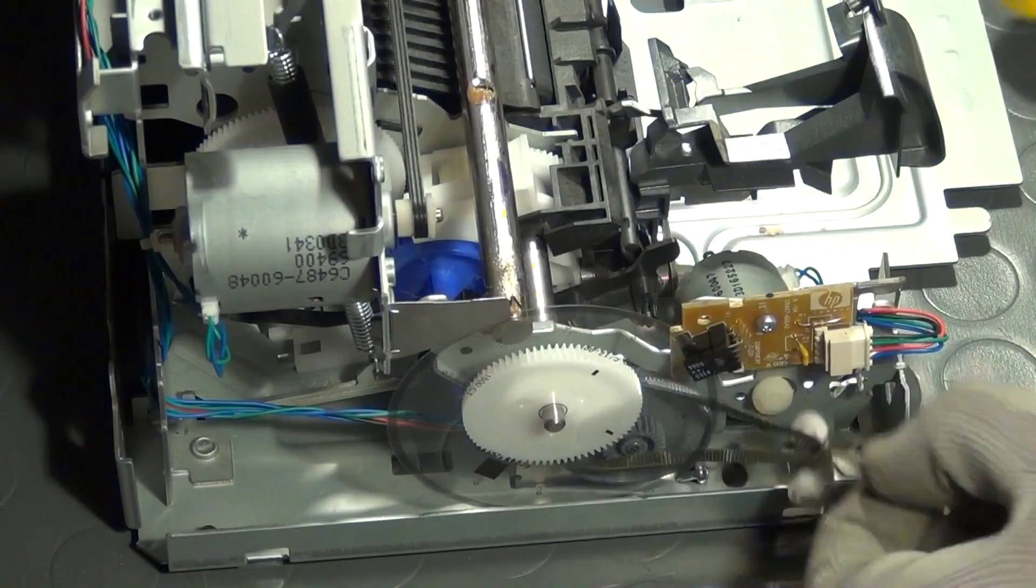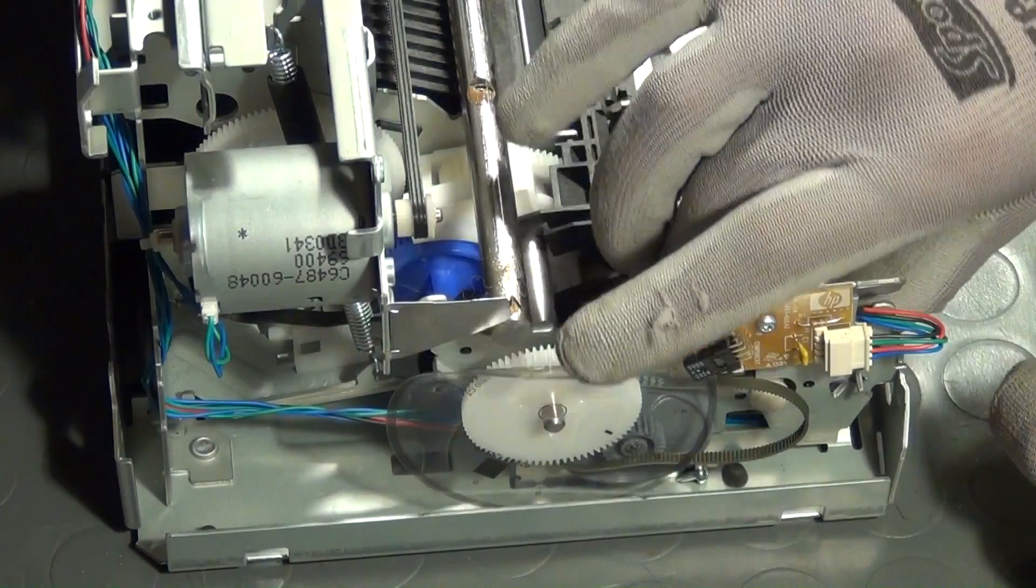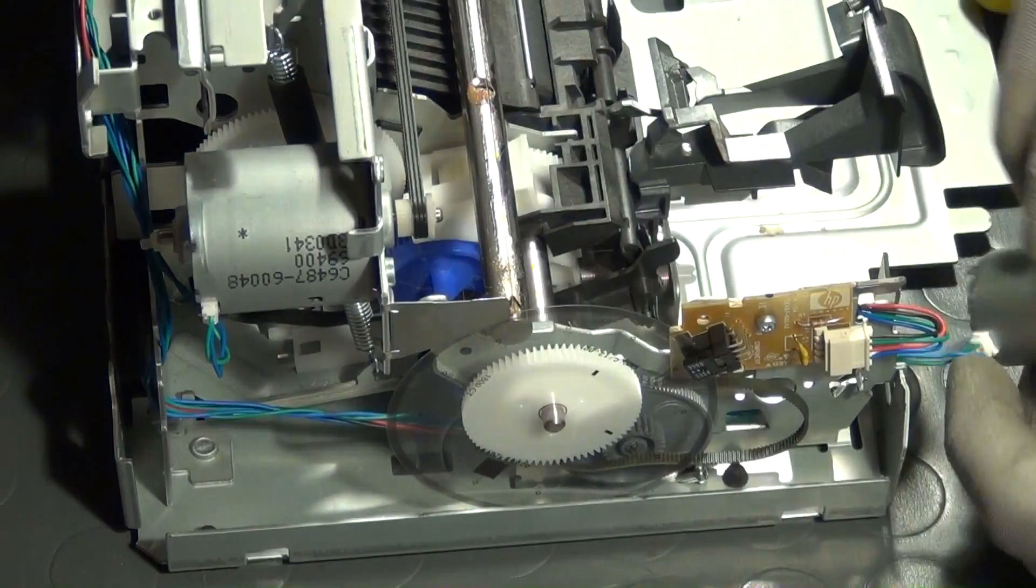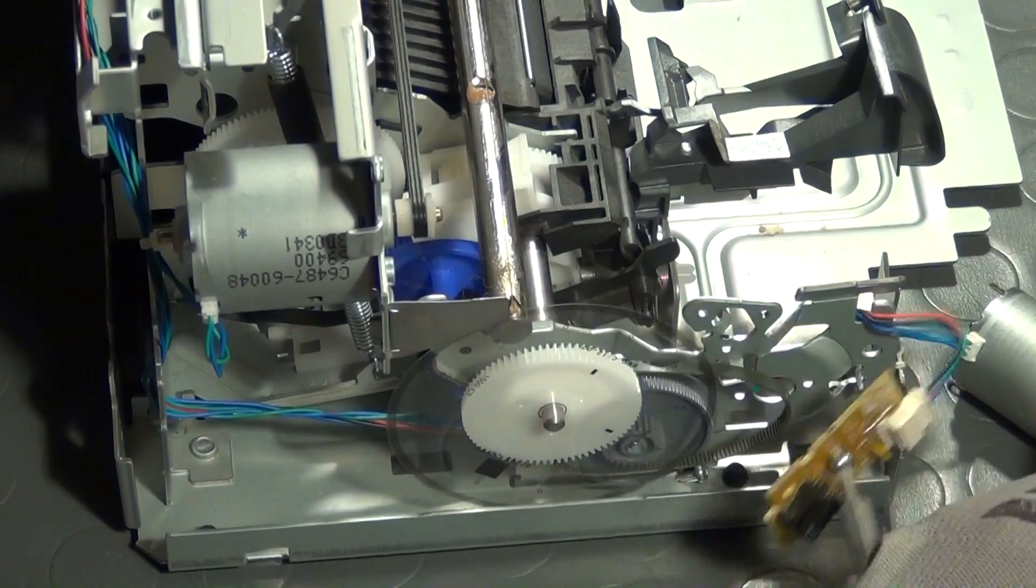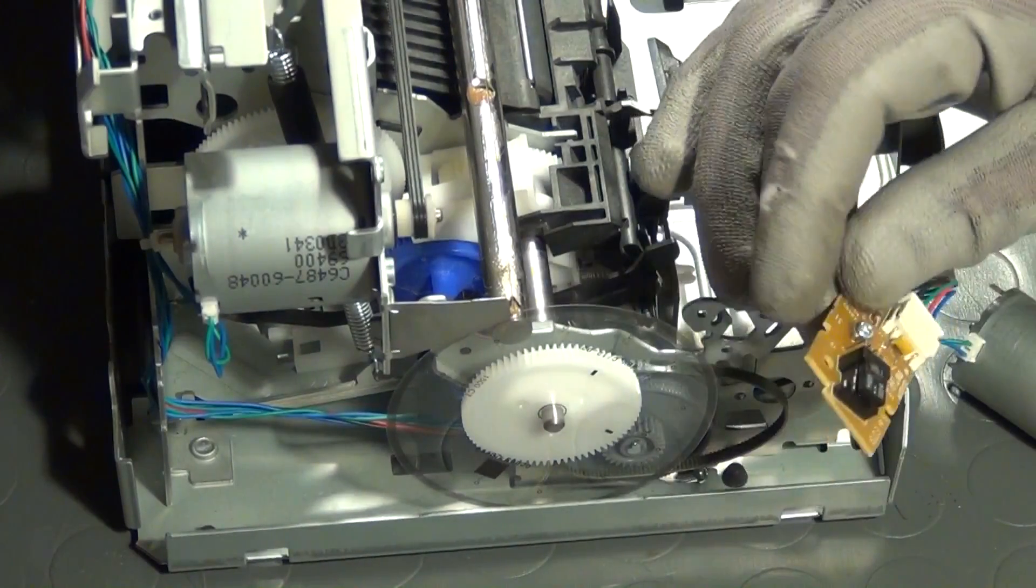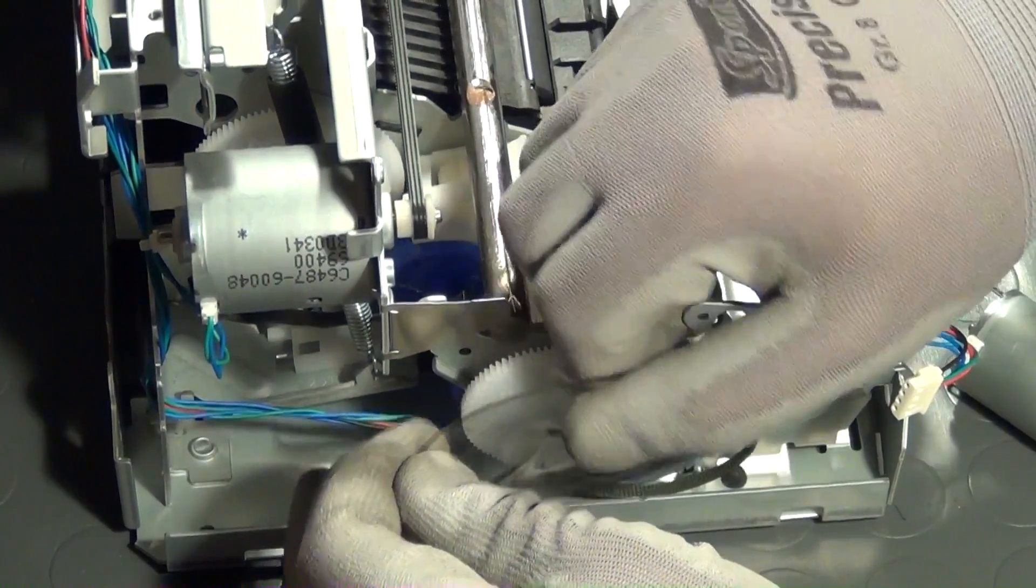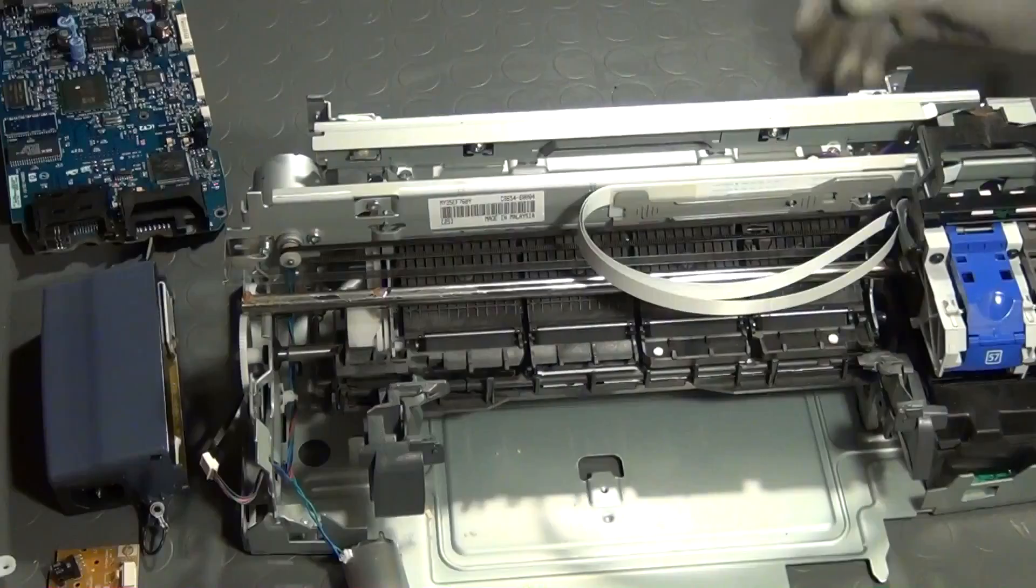The small DC motor, the board carrying the photo interrupter, and the transparent disc can easily be removed. While this smaller DC motor turns the axle which pulls in the paper and is thus responsible for the relative movement of the printer head in Y direction.